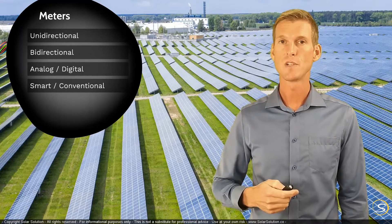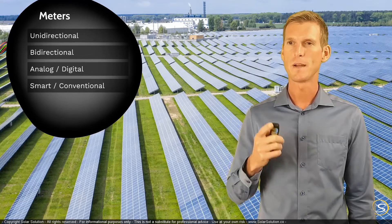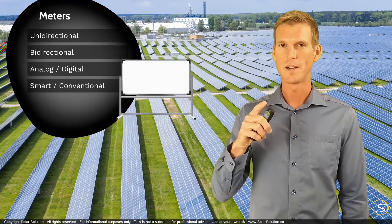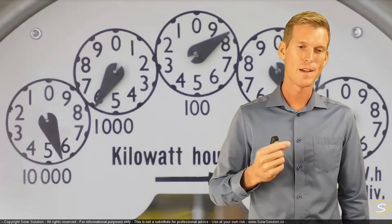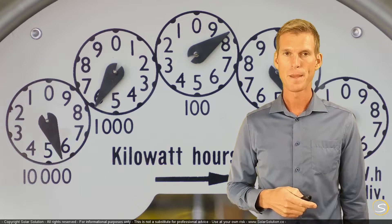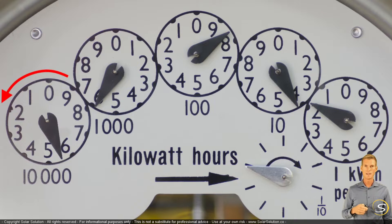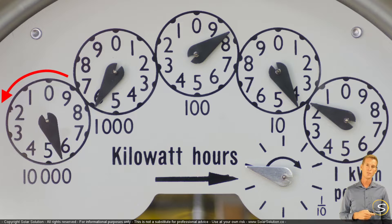For those of you who still have the original old-school unidirectional analog meters, you might recognize this panel. I want to clarify how to properly read your energy meter if you have one of those kinds, because it often goes wrong. We start on the left-hand side, where we have a dial that turns counterclockwise. This dial will tell you the tens of thousands of kilowatt hours that you have consumed.